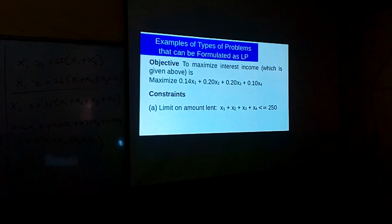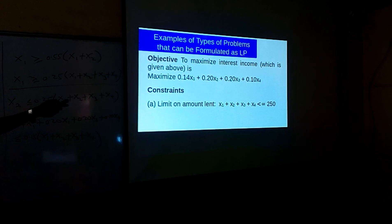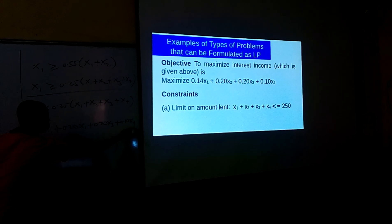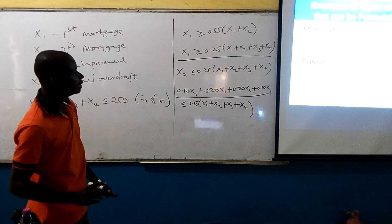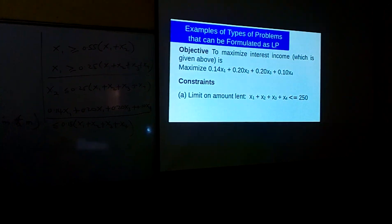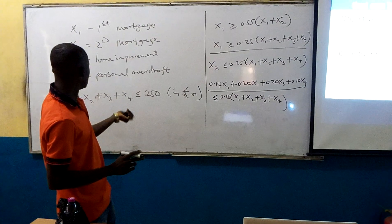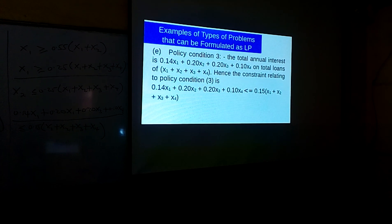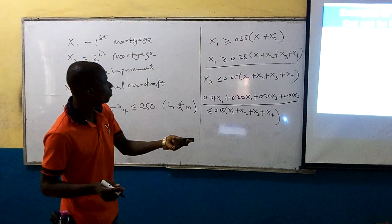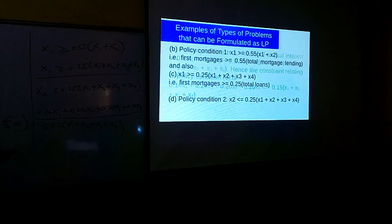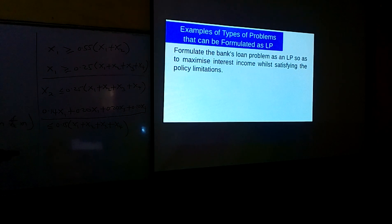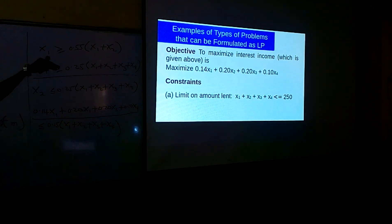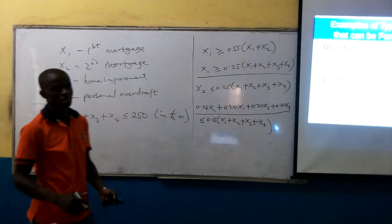They want to maximize interest, so the objective function is: maximize 0.14X1 + ... subject to all these constraints. If we write this formally using matrix notation: maximize 0.14X1 and so on, subject to all the constraints listed. That is the complete formulation of the financial planning LP problem.